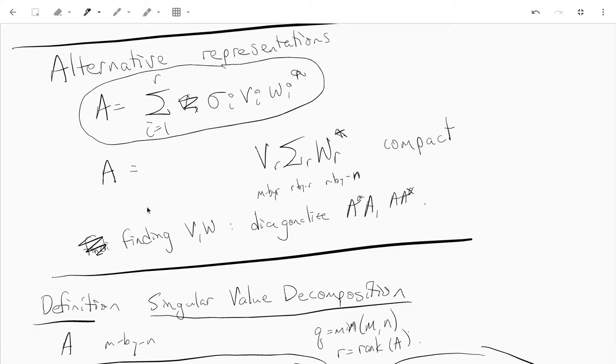And we can also write A in a compact form. We can take the R columns of V and the first R columns of W, and we can take sigma R as the R by R diagonal matrix with the singular values on the diagonal. We can write A equals V R sigma R W R star.